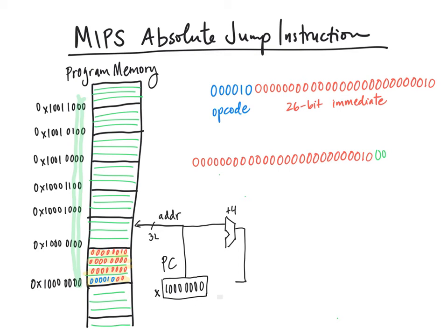In this case, what we're going to do is take the value of PC plus 4 and inspect the top four bits. We're going to limit the absolute jump instruction and say that it can only jump to addresses that share the first four bits with the PC plus 4 that would be calculated from its location.